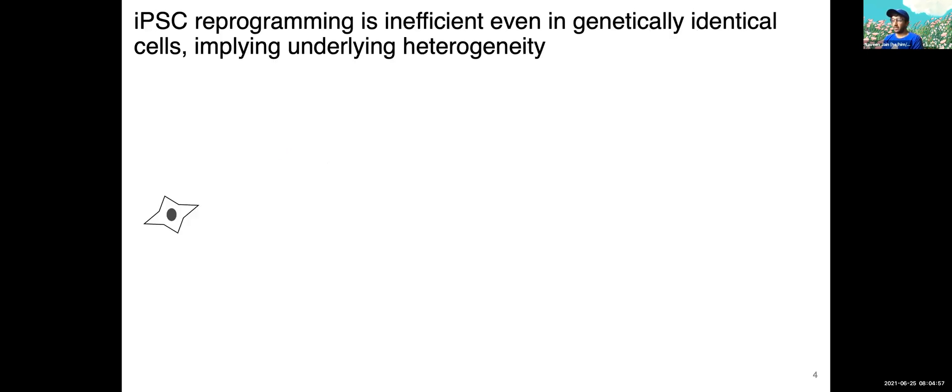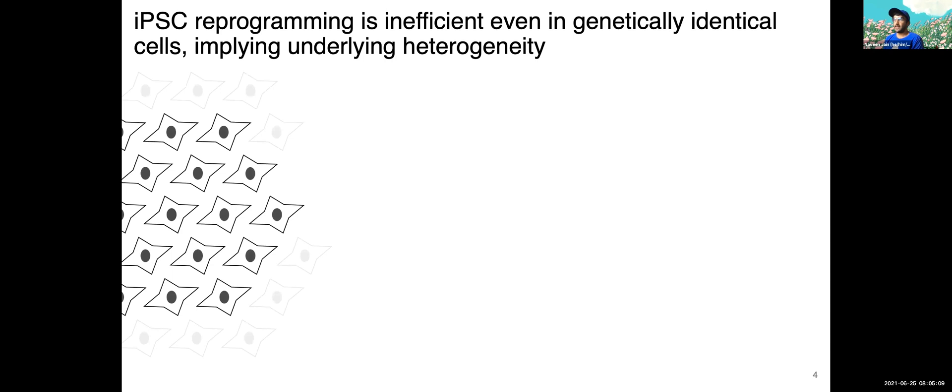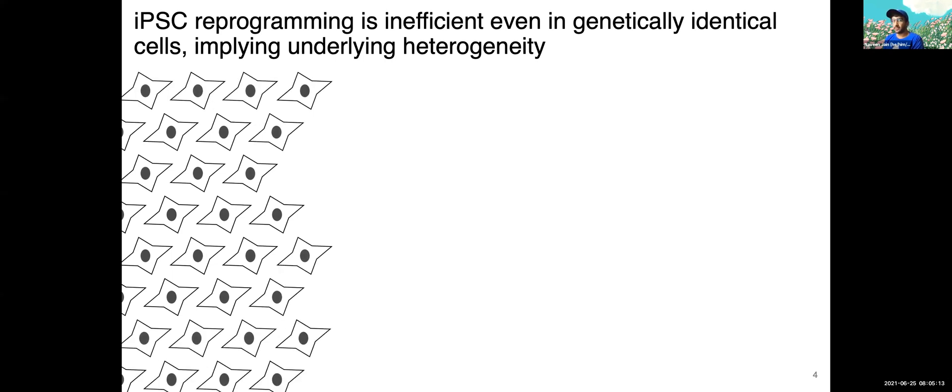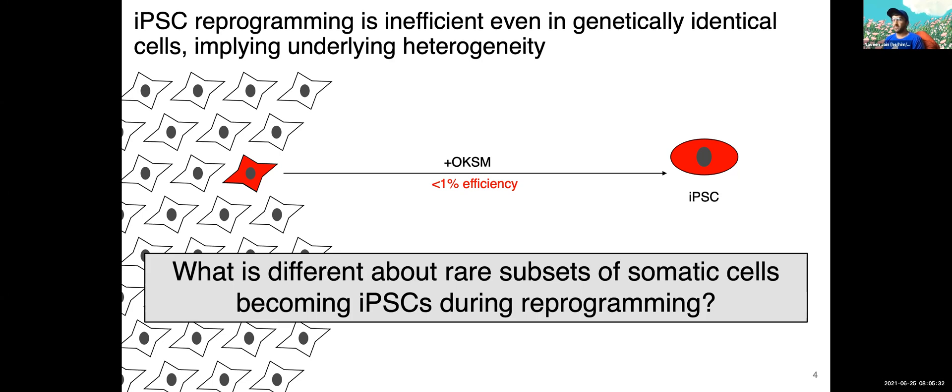This process is really great, but there's a reason why we don't currently have the ability to just create organs already for regenerative medicine, and that's because this process is extremely inefficient. If you start with a single cell and allow it to divide to create a population of genetically identical cells, when you actually induce expression of the OKSM, only a very small fraction of these cells actually go on to form iPSCs, usually less than 1%. This begs the fundamental question that we're trying to answer with this project, which is, what is different about these rare subsets, or in this particular case, this red cell that enabled it to become an iPSC when exposed to OKSM, when the rest of its neighbors did not. A cool nuance here is all of these cells are genetically identical, and that implies that there's some other source of heterogeneity or non-genetic heterogeneity that might be driving these differences.